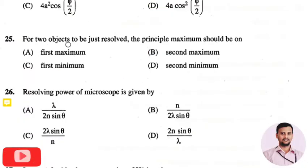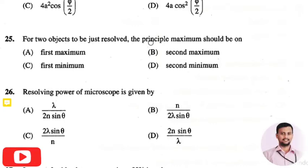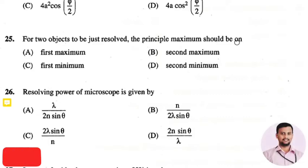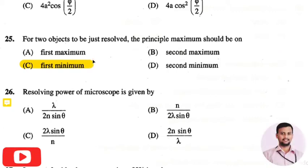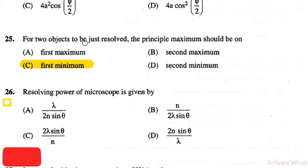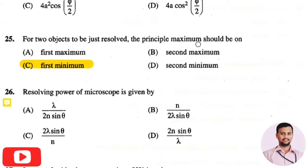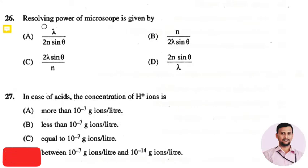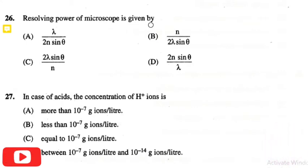The next question is: for two objects to be just resolved, the principal maximum should be on — the right answer is option three: first minimum. So for two objects to be just resolved, the principal maximum should be on the first minimum.